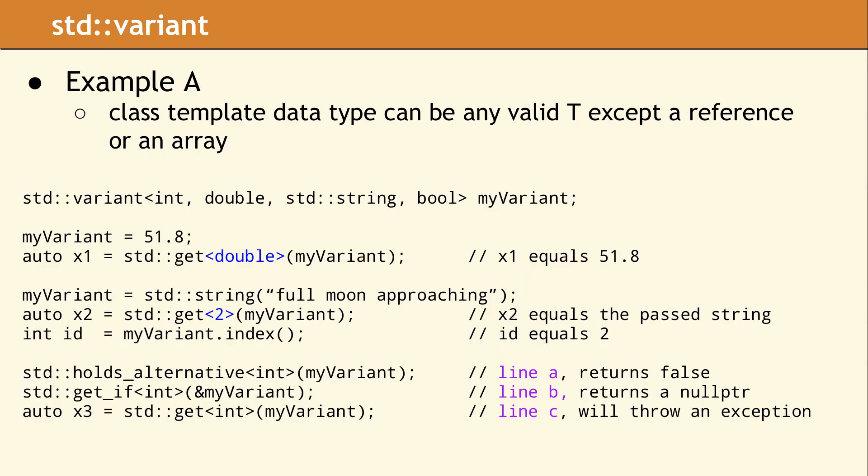This example shows several different ways to assign and access the value stored in a variant. Our variant has four alternatives: int, double, std::string, and bool. The first thing we do is initialize the variant to 51.8, which has a data type of double and will be saved in the double alternative. The next line of code calls the std::get function with a template parameter of double to retrieve the value. Then an std::string is created and placed in the string alternative. Calling get with the index of 2 retrieves this alternative, since the string alternative is at index 2 in the variant template parameter list. We then query the index of the current alternative, which returns 2 again, indicating the std::string alternative.